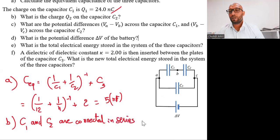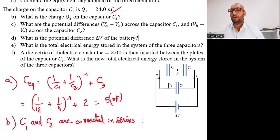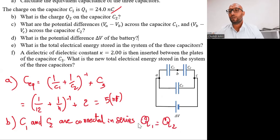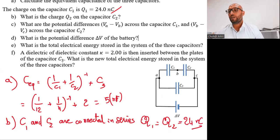So what would be the charge on C1? The charge on C1 is going to equal the charge on C2. Why? Because they are connected in series. So Q2 equals 24 nanocoulombs. We are done — just one step.